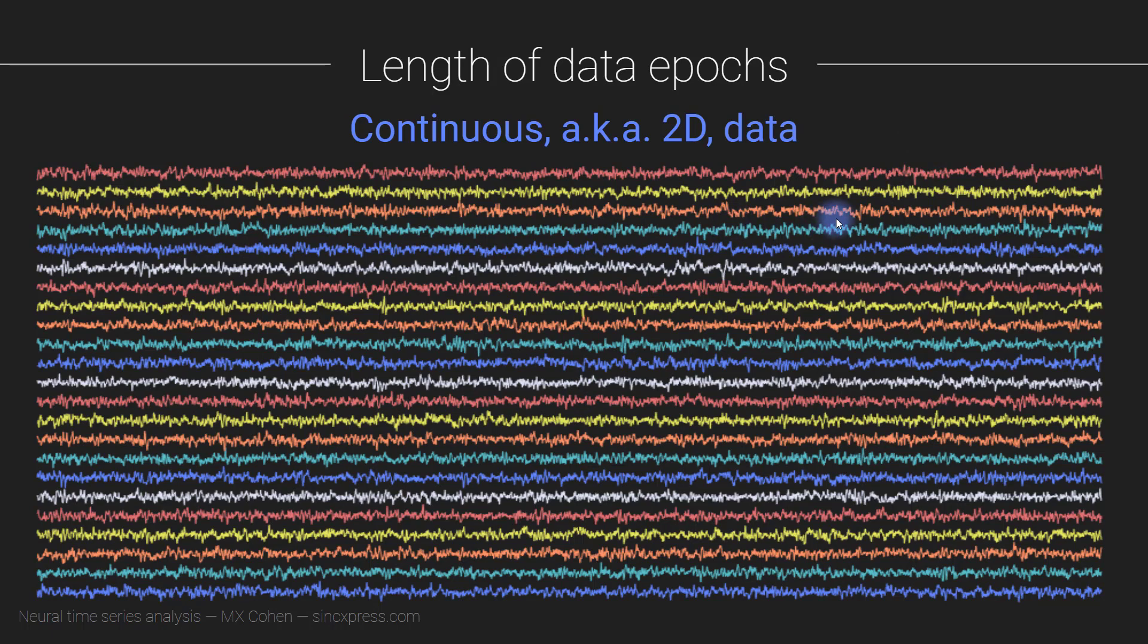So this can be a really long time series. And then the idea is that one of the initial steps of preprocessing your data is to identify the timing of different events that happened in the experiment. Or if it's spontaneous data or resting state data, you might still cut up the data into, let's say, two second segments.